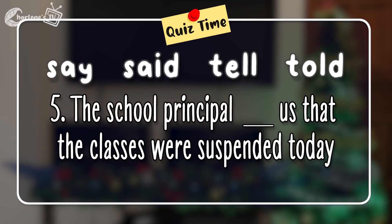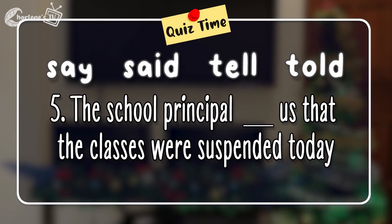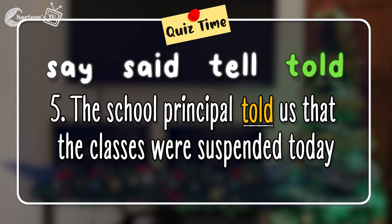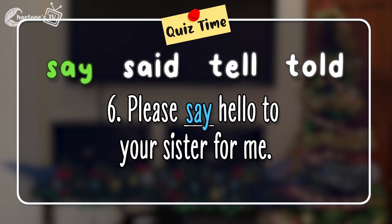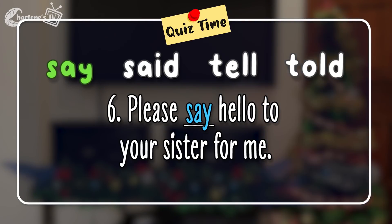The correct answer is told — kasi may us pagkatapos ng blank, may tao na pinatutunguhan. May someone, at hindi tell kasi tapos na ang sabihin ng principal — kaya told na. Number six: Please blank hello to your sister for me. Ang tamang sagot dito ay say — dahil mangyayari pa lang, at ang kasunod ay hello. Huwag ka malito kasi oo, may sister na nabanggit at tao yan, pwedeng tell. Kaso nauna yung hello — ang hello dito ay something na gustong ipasabi. Please say hello to your sister for me.